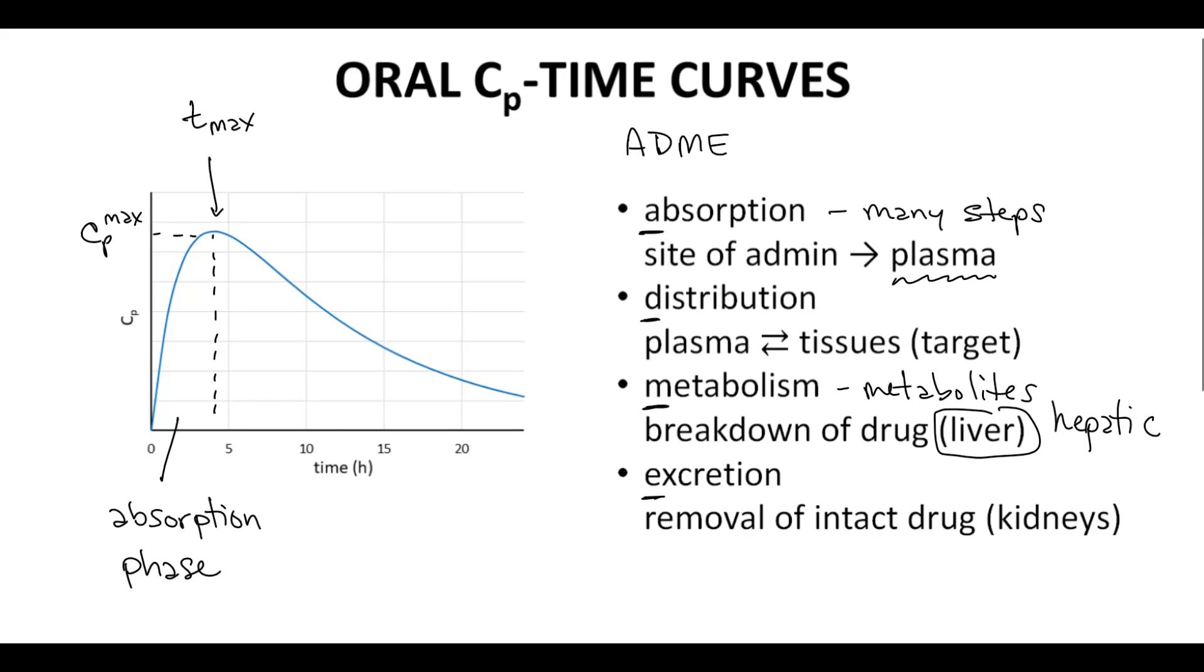Excretion is the removal of intact, unmetabolized drug from the plasma by the kidneys. So we are talking about renal excretion. Excretion can occur in other tissues. As plasma flows through the kidneys, a portion of the drug will be filtered by the kidneys and collected in the urine for excretion from the body. Metabolism and excretion together cause plasma concentration to decrease and are collectively called an elimination process. Elimination is typically the period, the elimination phase is the time after Tmax, and metabolism and excretion contribute to the elimination phase.